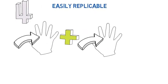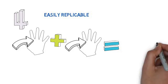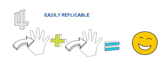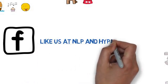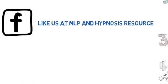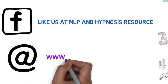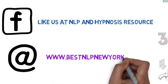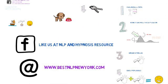So when you anchor someone, you set the anchor, you condition it through repetition, and then you test to see if the anchor has taken. To find out more, join the discussion on Facebook at NLP and Hypnosis Resource. To discover training opportunities, check us out at bestNLPNewYork.com. We'll see you next time.